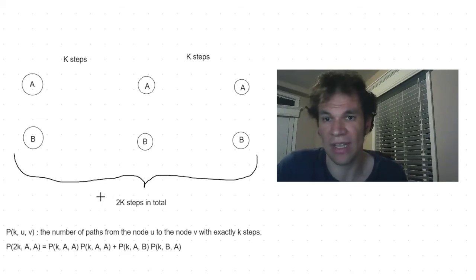And this function P is the number of paths from a node U to a node V with exactly k steps. So with the previous reasoning we have that P of 2k from A to A it's basically P of k from A to A times P of k from A to A. If you are struggling to get what this formula is or why it is true, feel free to pause the video or to check my explanation again before continuing because the next equation will use this and it will get more complicated.